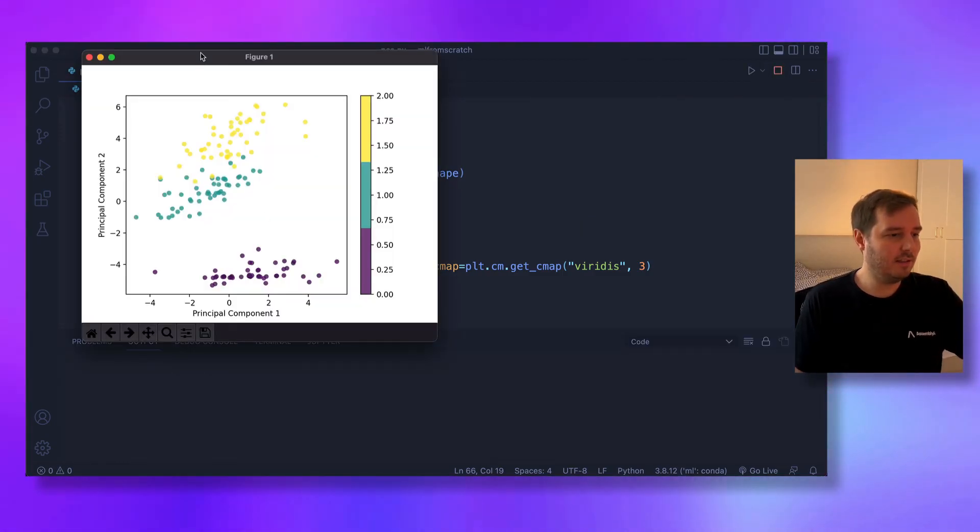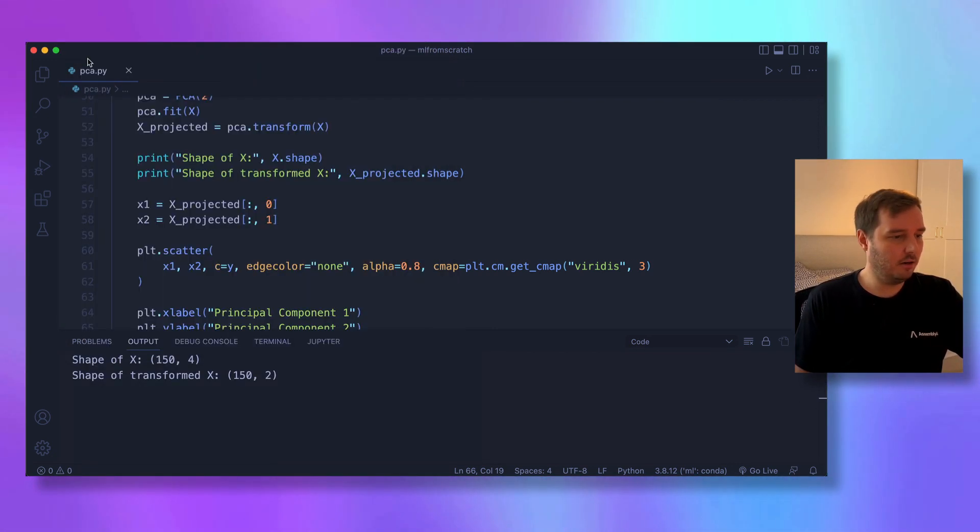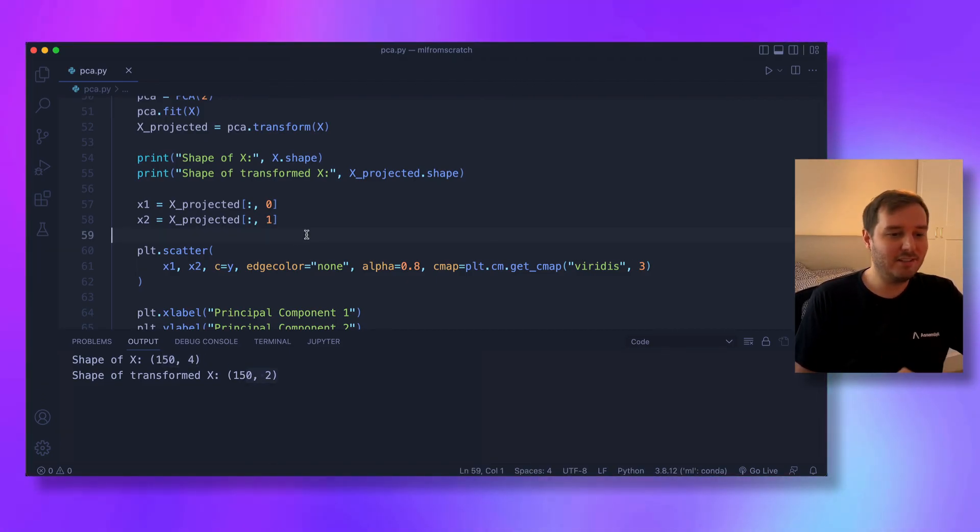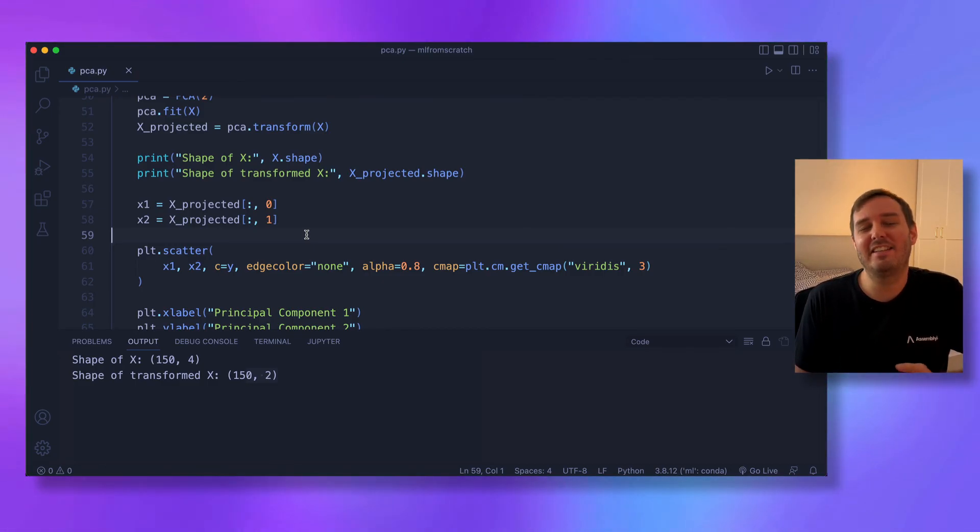If we run this, it works. This is the projected data now in 2D. If we close this and print, we see the original data had four dimensions, and the projected data has two. So we reduced the dimensions from four to two. This is how we can implement PCA from scratch. I hope you enjoyed this lesson, and I hope to see you in the next one.